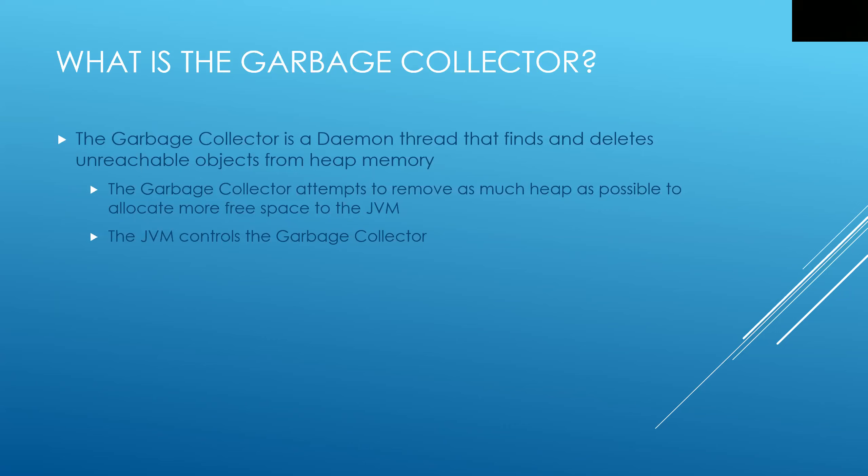Your next question may be: what is an object that's considered unreachable? As we talked about in our last topic, we talked about threads, and we said that there's at a minimum one thread — main — and then whatever other threads are associated with the process or the code. So threads have different states. If there is a live thread that can't reach the object, it's considered unreachable, and then it's eligible for garbage collection.